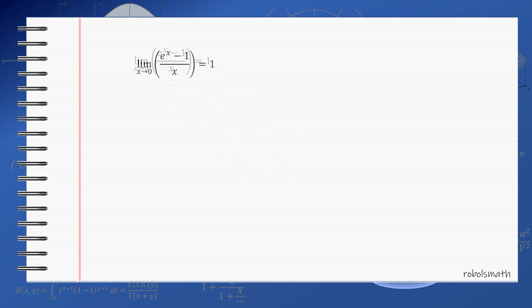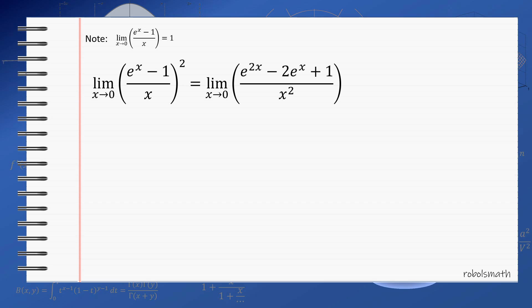Using this known limit, we proceed as follows. First, we take the square of the given expression. We can definitely do so because the limit exists. Since the original limit is equal to 1, then this operation still gives out the limit of 1 squared or 1. The expression then becomes e to the 2x minus 2 e to the x plus 1 all over x squared, still as x approaches 0.